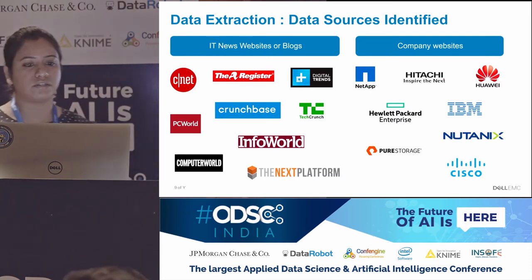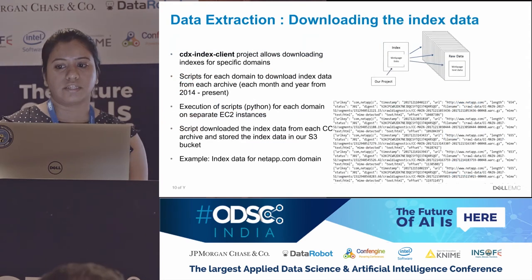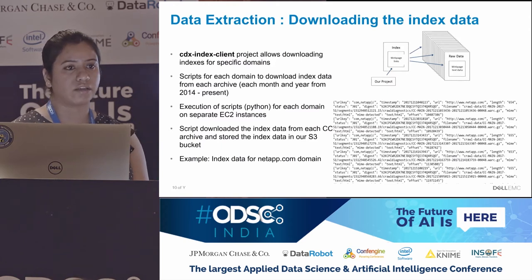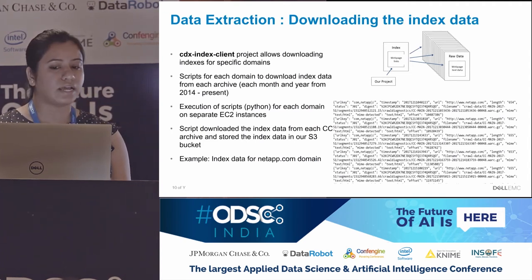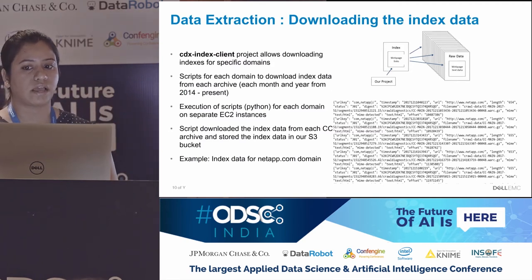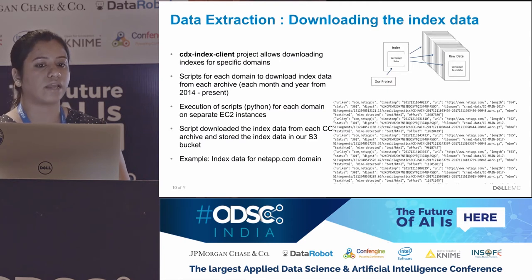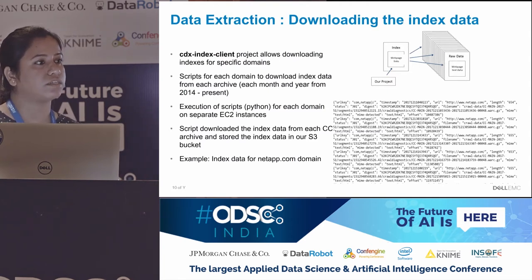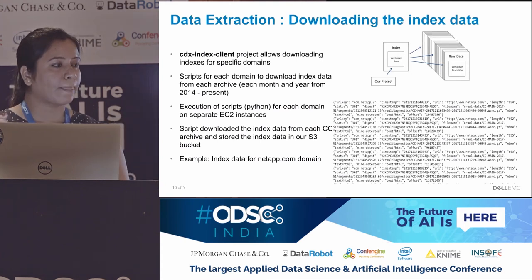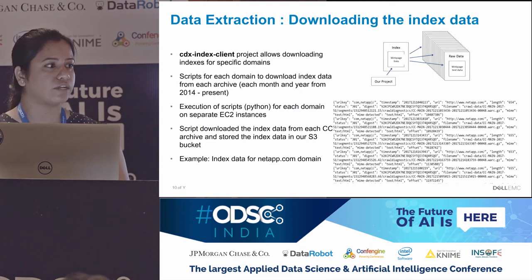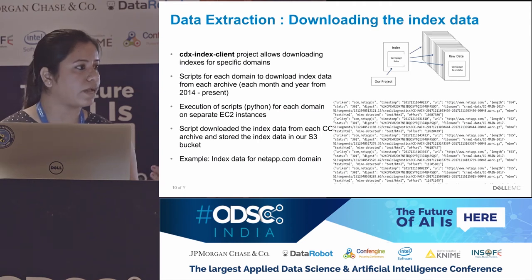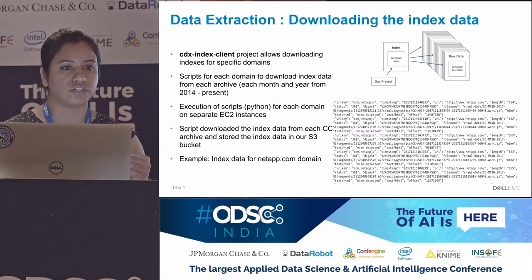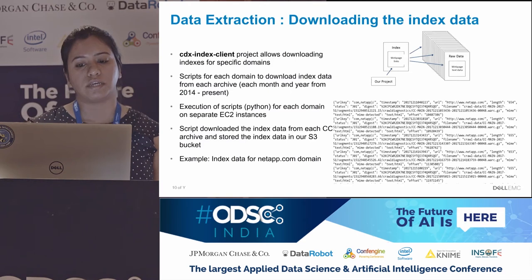When it comes to downloading the data, there is raw web page data available in the Common Crawl archive — but with billions of web pages, you cannot just connect and download the data. There has to be an indexing mechanism. There is an index server that has indexing for all the web pages available in the archive. CDX Index Client is an open source project available on GitHub — I'll be sharing the links towards the end of this talk. This project allows you to download the index data, and using that index data you can further download the actual raw web page data. We wrote a lot of Python scripts to download the indexes for the domains we were interested in, like netapp.com, thenextplatform.com, or theregister.com.